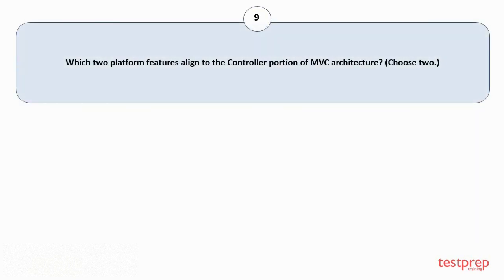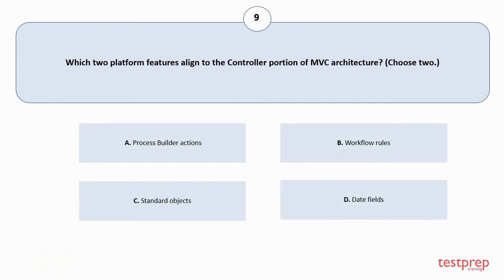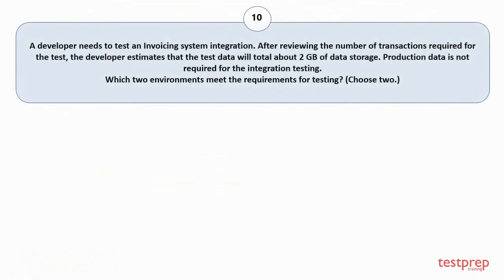Question number 9: Which two platform features align to the controller portion of MVC architecture? Choose two. Your options are: A. Process builder actions. B. Workflow rules. C. Standard objects. D. Date fields. The correct answers are option A and B.